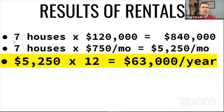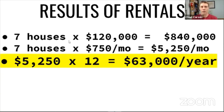And here's the thing — seven houses. On BiggerPockets and other podcasts, you hear about people buying 100 or 1,000 properties, and it seems like that's what success looks like. But somebody with just seven paid-off houses makes $63,000 per year. What could you do with your time? With a property manager, would you really be spending all your time managing seven houses, or would you have the flexibility to do other things?